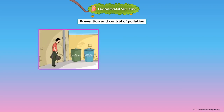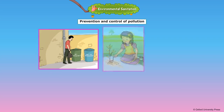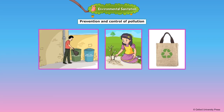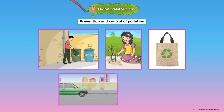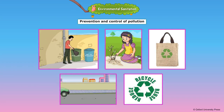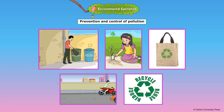We should throw garbage only in covered dustbins. We need to plant more trees. We can use reusable bags instead of plastic bags for shopping. We should avoid unnecessary honking while driving. We should always reduce, reuse and recycle.